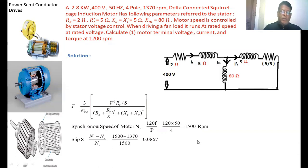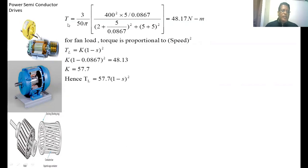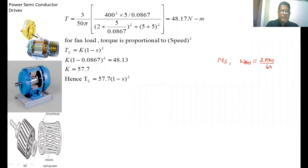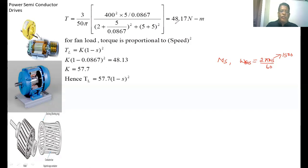Substituting all values into the torque equation: T = (3 / ωS) × V² × (RR'/S) / [(RS + RR'/S)² + (XS + XR')²]. The synchronous speed ωS in radians per second is calculated as 2πNS/60, giving 55 rad/s. For delta connection, phase voltage equals line voltage. Substituting 400V and all parameters, the torque developed is 48.17 Nm.